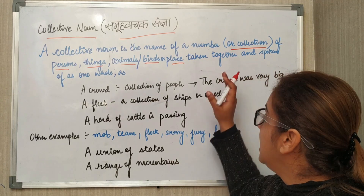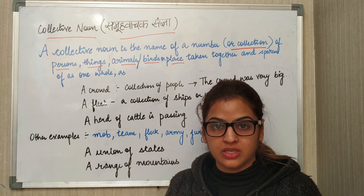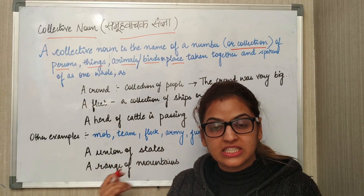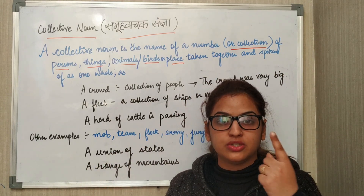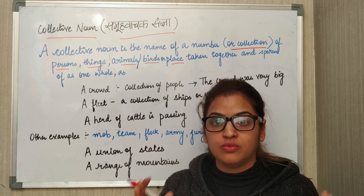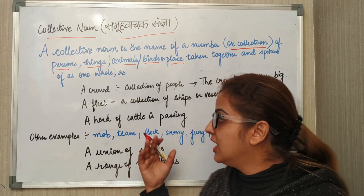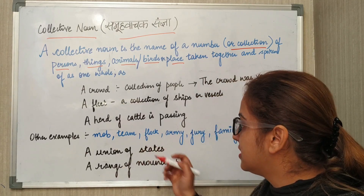Where there is a whole group of people. A collective noun is not talking about a particular person. It is always counted as more than one. Let's talk about the examples.